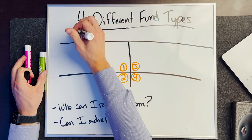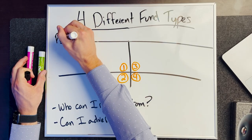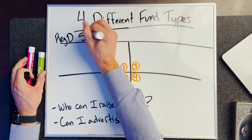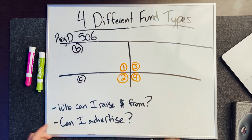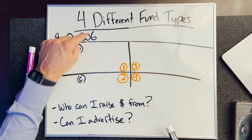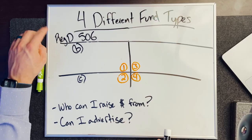The first two fund types are how 99% of all capital in the world is raised. It's under what's called Regulation D 506. Reg D 506 is the mecca of funds — this is where all funds raise money from. You have a 506B and a 506C. These two fund types are the kings; 99% of all private capital in the world literally flows through a Reg D 506.